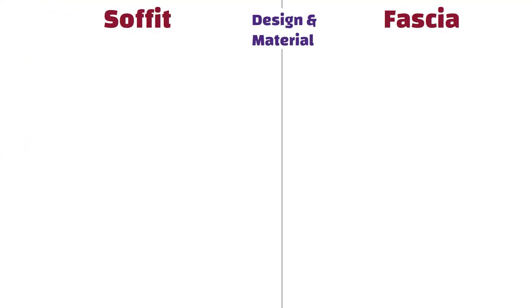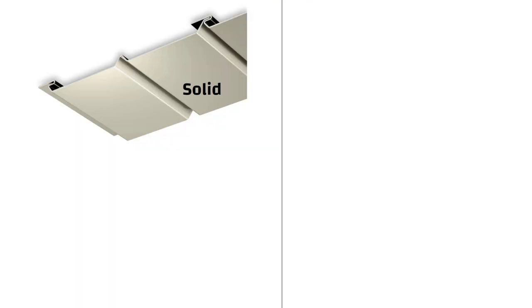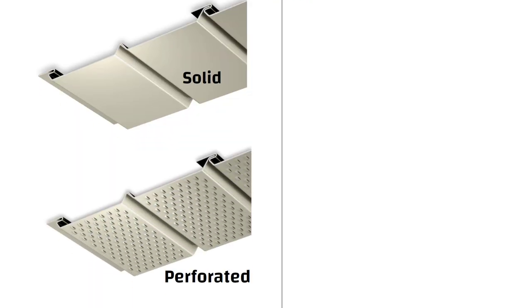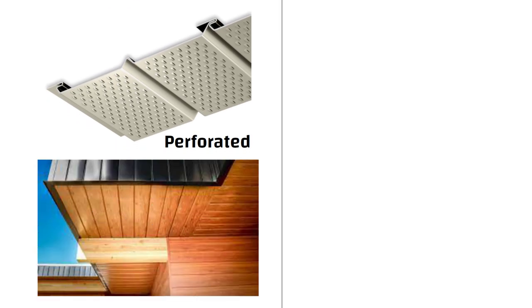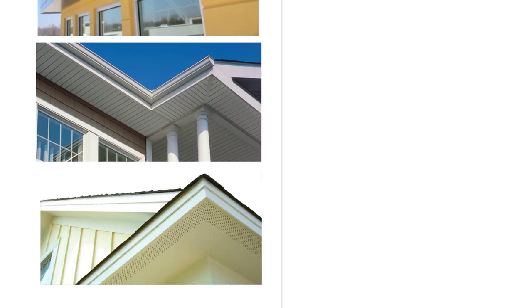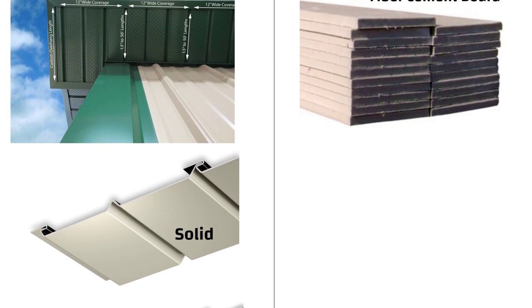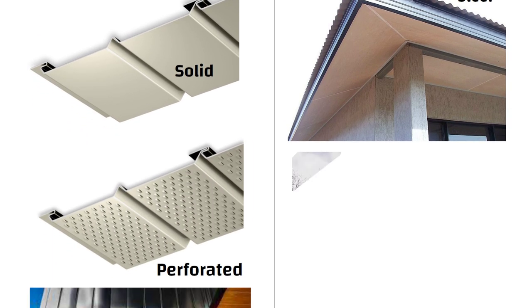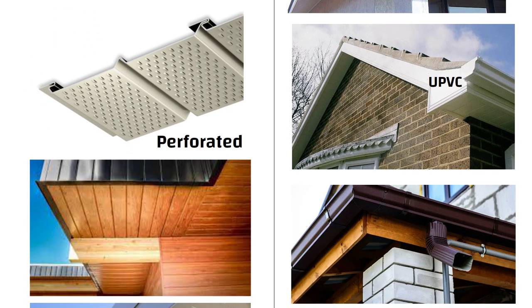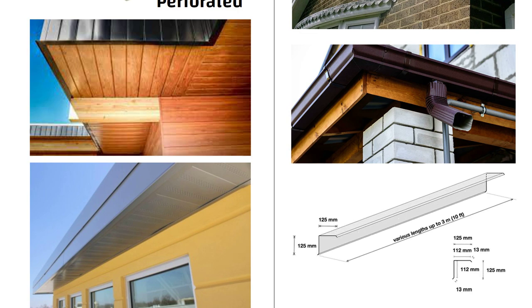Design and Material: Soffits are available in various designs including solid and perforated panels. They are usually made of materials like wood, aluminum, vinyl, or fiber cement. On the other hand, fascia boards are typically made of fiber cement, steel, uPVC, and wood. They are available in different widths and thicknesses to accommodate the specific design requirements of the building.